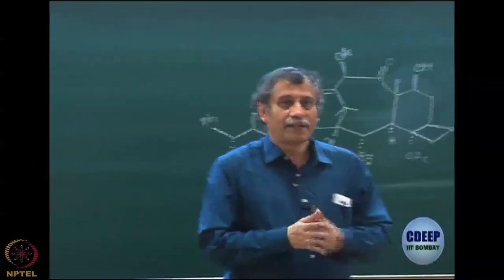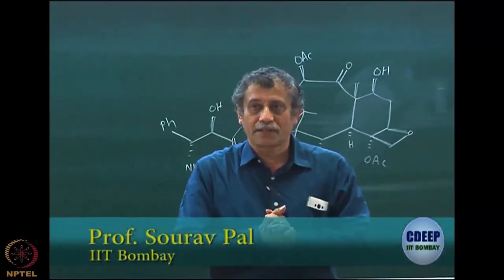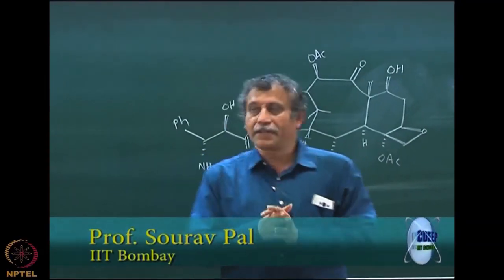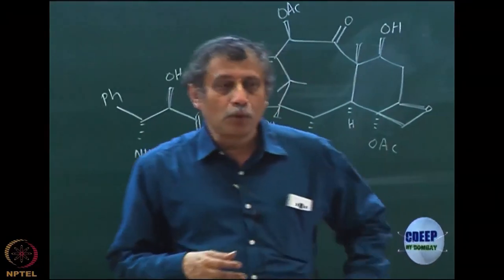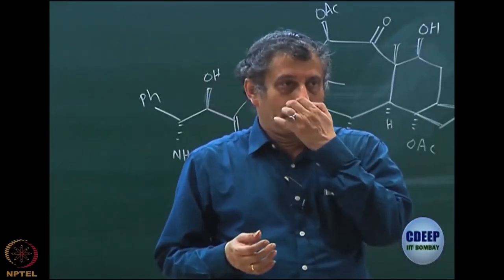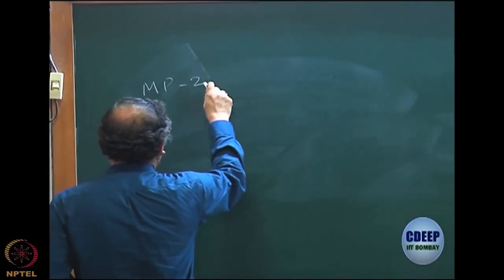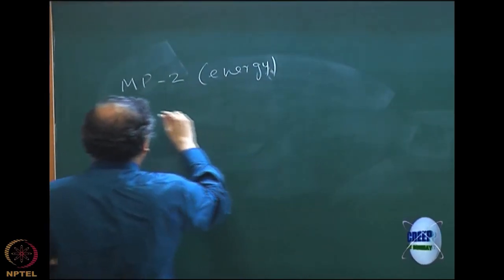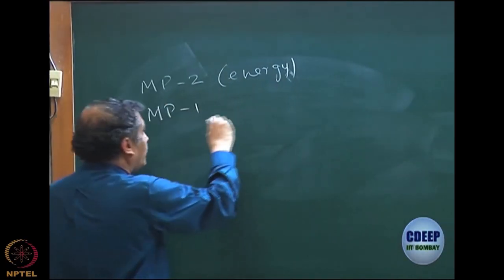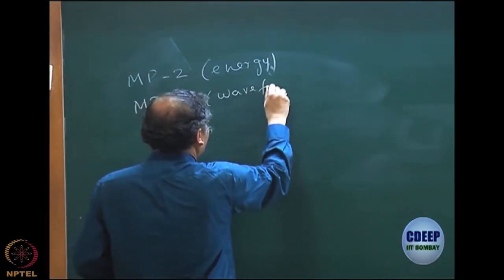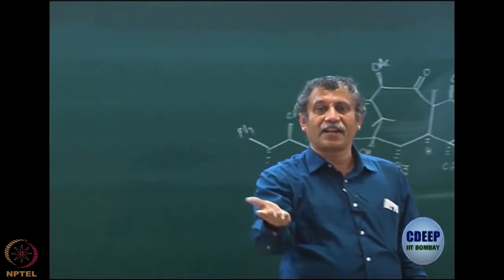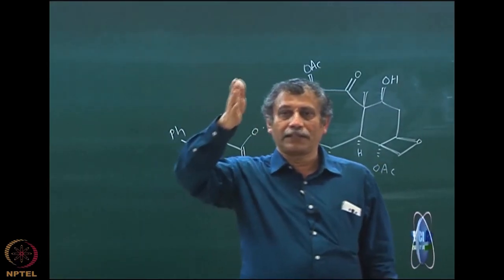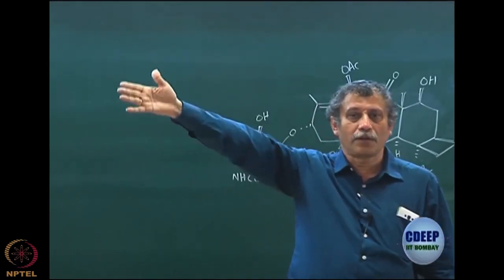Let me again summarize what we said in the last class before we move to the next topic: configuration interaction. We saw in perturbation theory that up to second order we find the importance of doubly excited determinants. From the MP2 description, when we say MP2 it is for energy, but the wave function actually starts at MP1. The first order correction is at the first wave function, which corrects at first order, and hence the energy corrects in the second order because E02 equals psi-0-0 V psi-0-1.